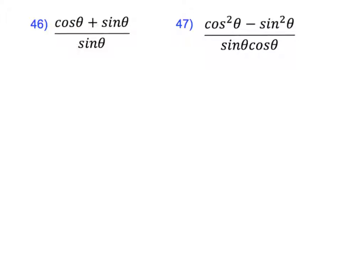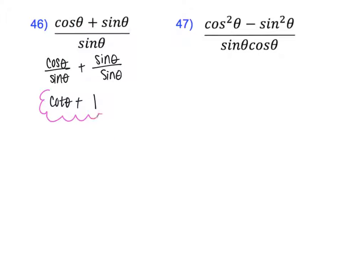Here I have a fraction, and when you're dividing by something, one way to handle it is to separate the terms using the denominator for each one. Cosine would get divided by sine, and then sine would also get divided by sine. So the first term is cosine over sine, which is cotangent. And then sine over sine — anything over itself is just 1. I can't simplify further, so this is cotangent plus 1.